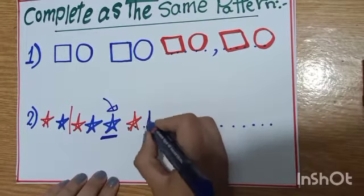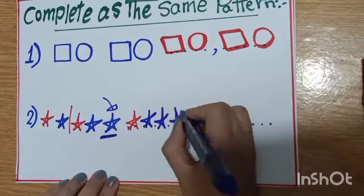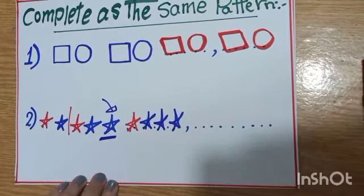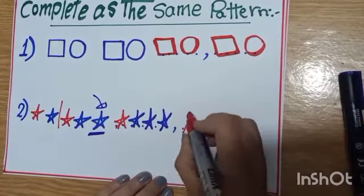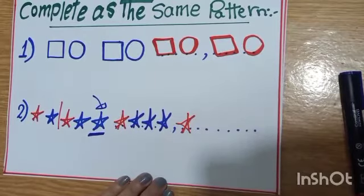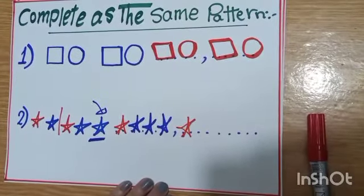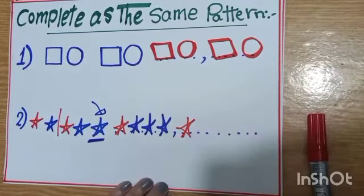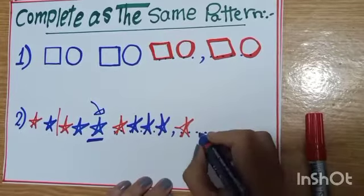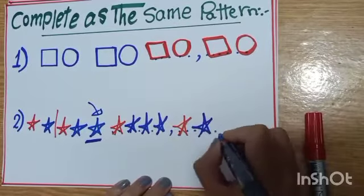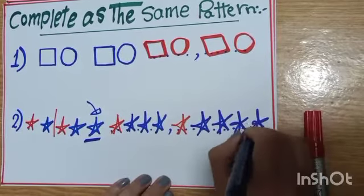So I will draw one, two, three blue stars. The next one, I will draw one red star only. And how many stars? Very excellent. Now I will draw four blue stars. One, two, three, four.